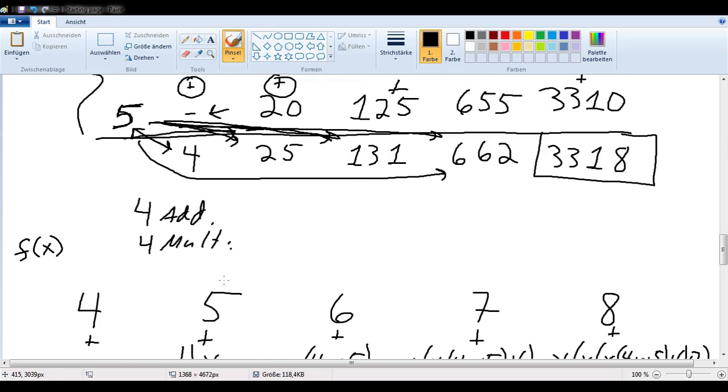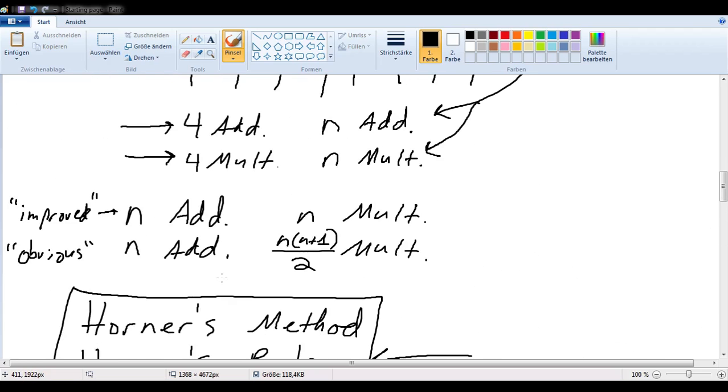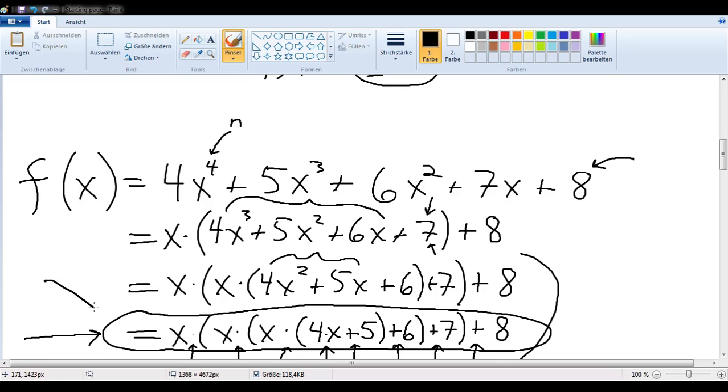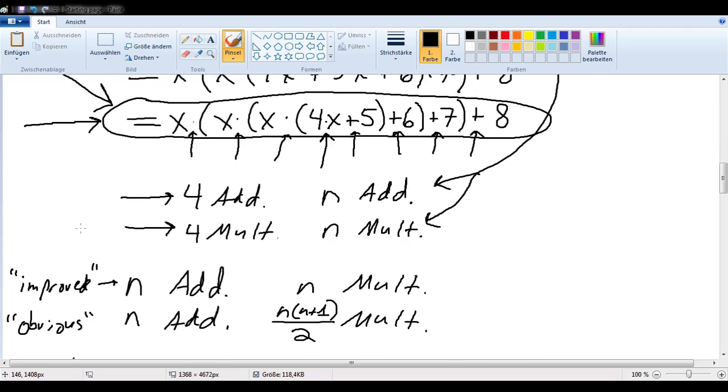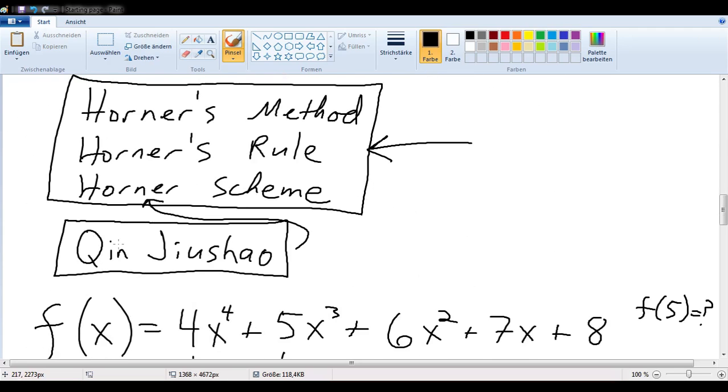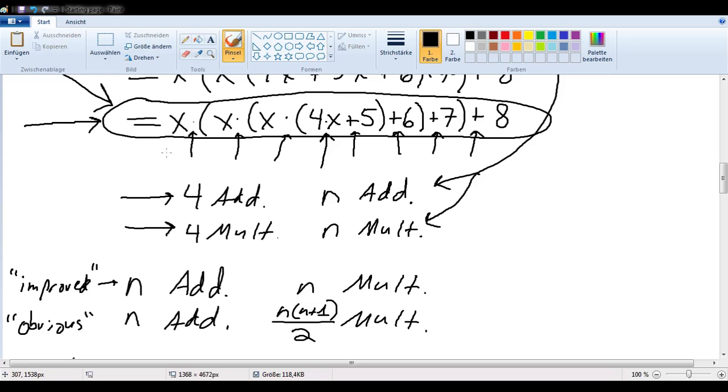And if we look back, that is exactly what we had computed before. And as we saw before, that is what f of x was equal to. So it turns out that Horner's method is just doing what we had seen here when we factored out these x's.